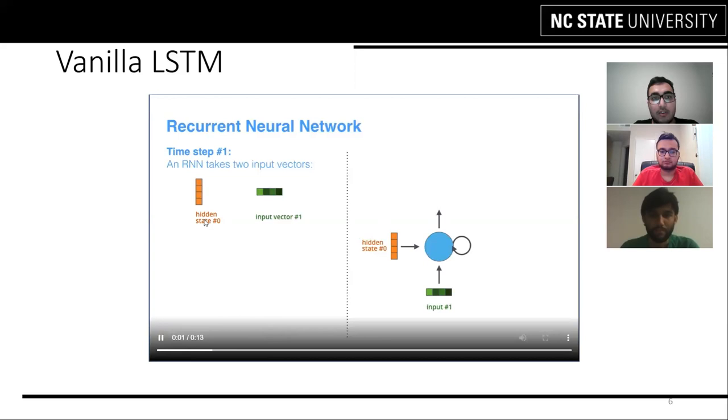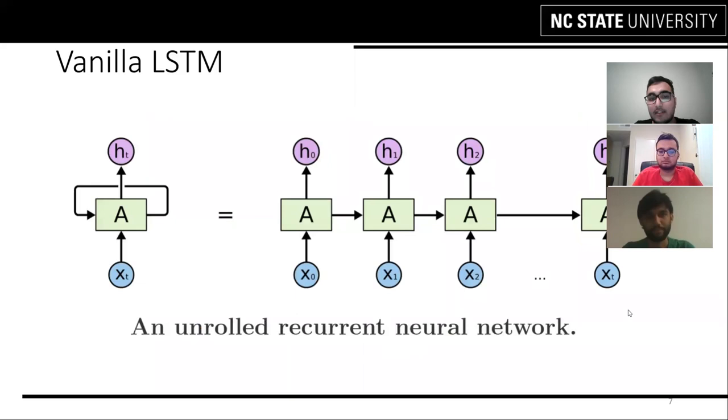We are giving it two vector inputs which are hidden state 0 and input vector 1 which it processes and produces two output vectors which are hidden state 1 and output vector 1. The hidden state 1 vector is used as one of the input vectors in the next node. Here is the unrolled RNN structure with X as input and H as outputs and the connections between different nodes as output vectors.